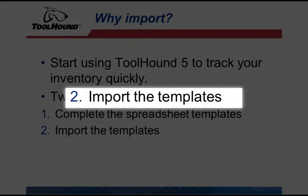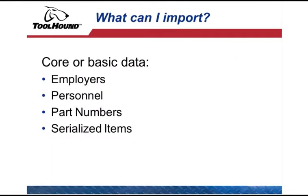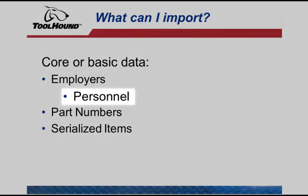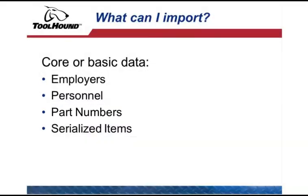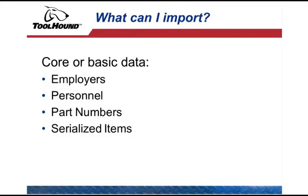The second step is to import the templates into ToolHound using the Import Data feature. The core data types most commonly imported are: employers, personnel, part numbers, and serialized items. We will look at each of these four during this video.